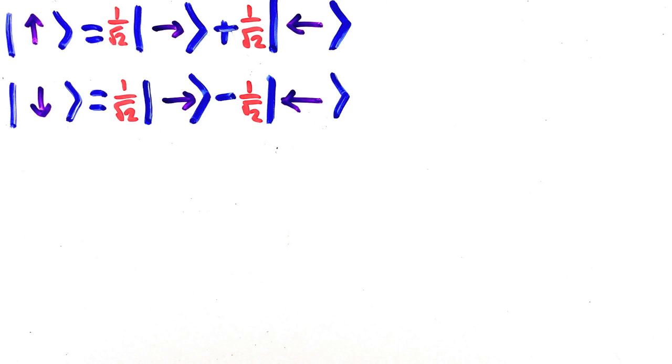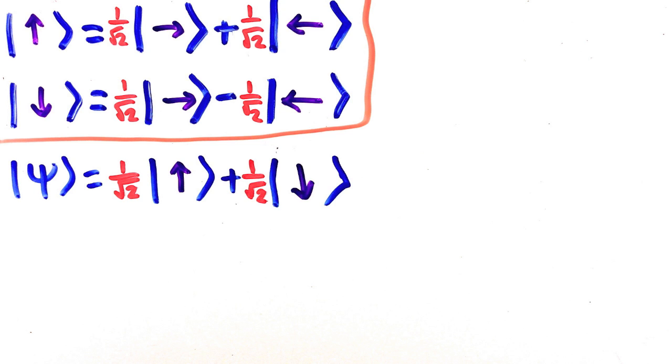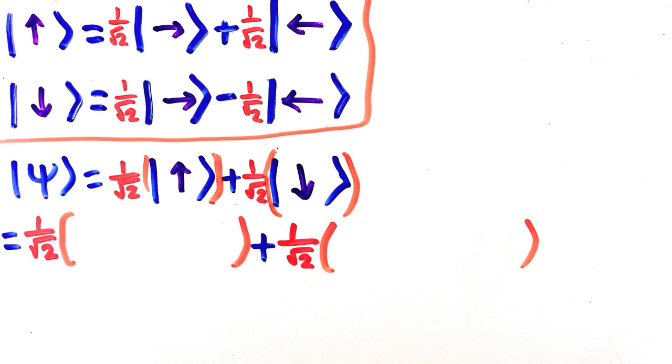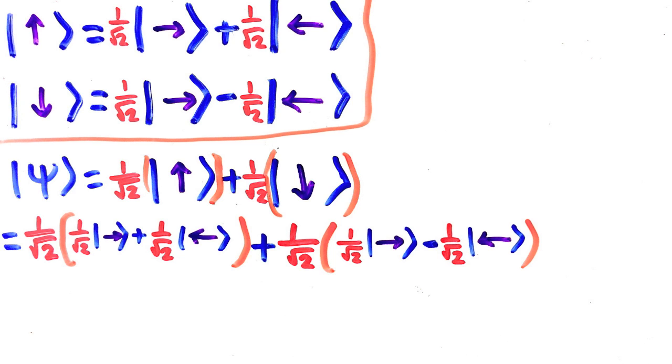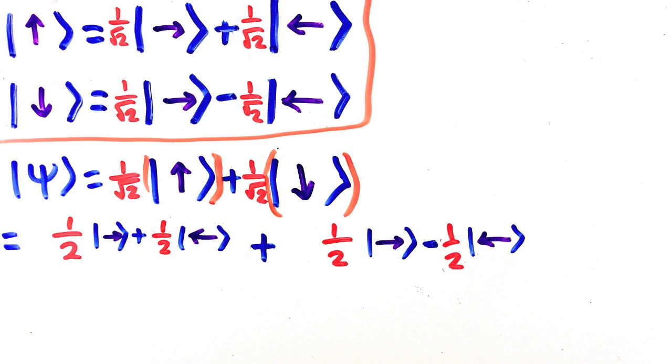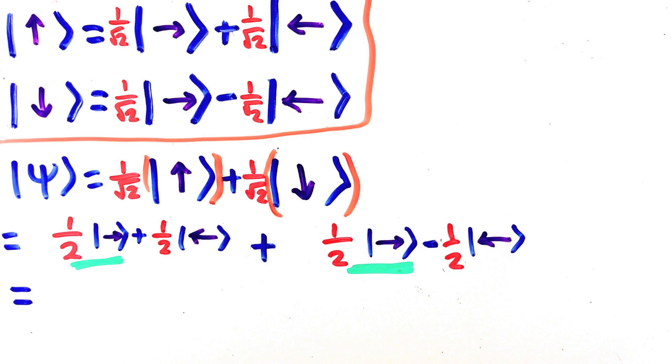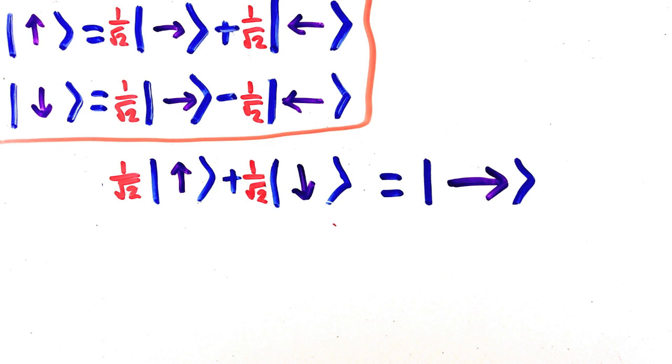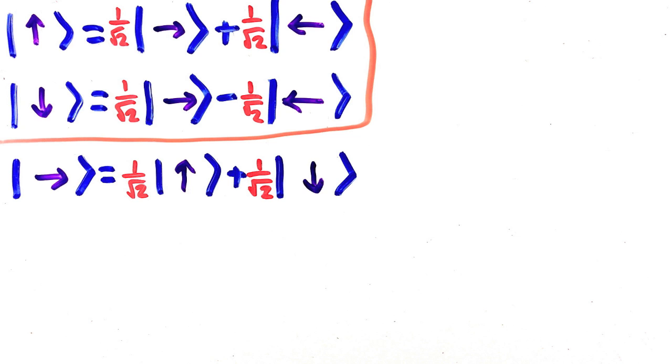It says whenever you see up, you can change basis by replacing it with right plus left, and whenever you see down, you can replace it with right minus left. So in our case we have this, and so we change basis by replacing this up and down. All that's left at this point is expanding these brackets, and then collecting terms. These two right eigenstates are constructive. The left eigenstates are opposite signs, and so they're destructive. In the end, we just get that up plus down equals right. I encourage you to try up minus down, and you should get left.